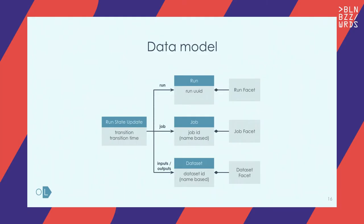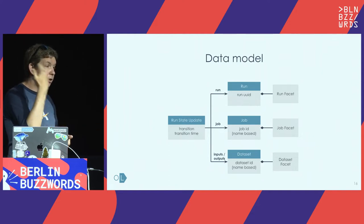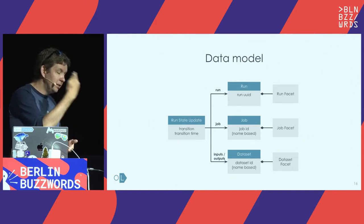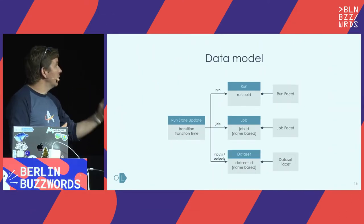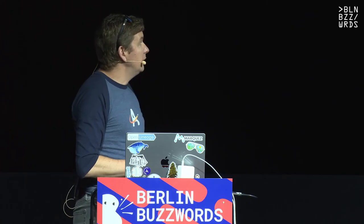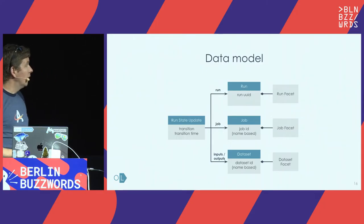The data model is fairly generic and extensible. For each run state update there's a consistent job name, which is the identifier of the job — the thing that runs regularly, for example a hourly or daily transformation. We have inputs and outputs pointing to data sets, and data sets have consistent IDs that are name-based. That makes sure we identify consistently what are the inputs and outputs of those jobs. There's also a run ID that identifies every instance of the job running.